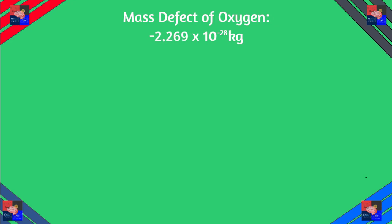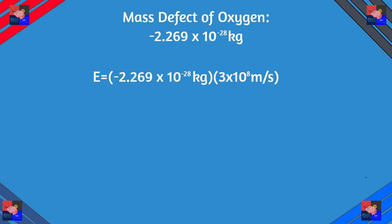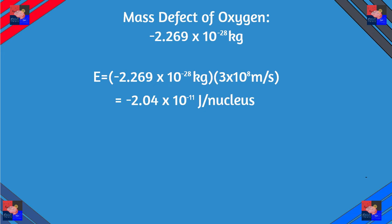The mass defect for oxygen is negative 2.269 times 10 to the negative 28th kilograms. Now let's plug this into our mass-energy equivalence equation. We have negative 2.269 times 10 to the negative 28th kilograms times the speed of light squared, and we get negative 2.04 times 10 to the negative 11 joules per nucleus. The negative here means that the energy is being released.